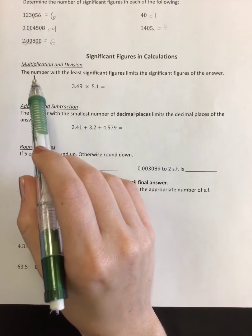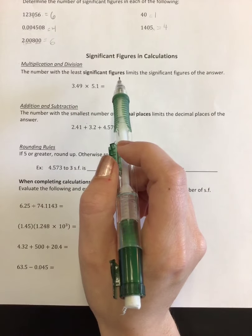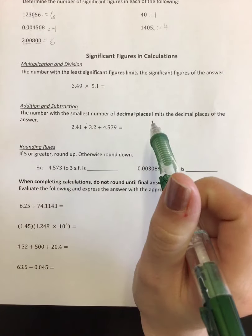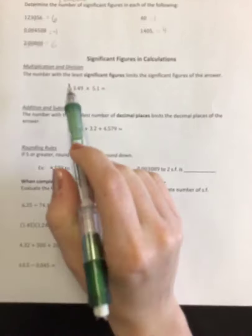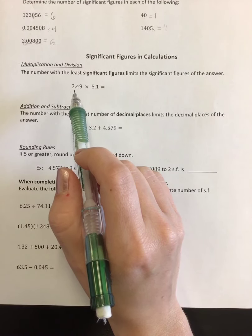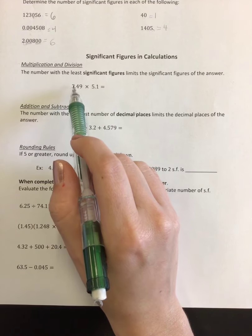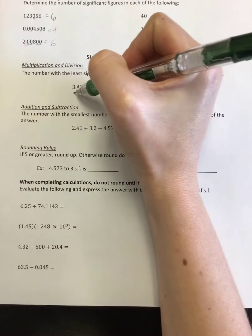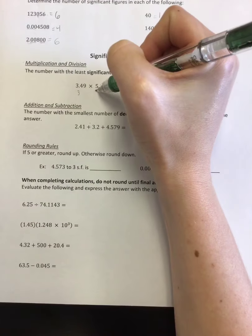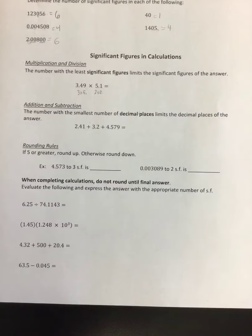So the rule for multiplication and division is the number with the least number of significant figures limits the significant figures of the answer. So as an example, 3.49 times 5.1. Least number of sig figs limits the sig figs in the answer. This number has 1, 2, 3 sig figs. This number, 5.1, has 2 sig figs. Let's go ahead and write sig figs out a little so we know what those numbers mean.